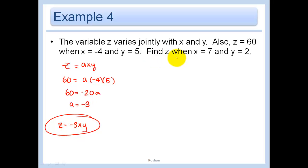And then it says find Z when X is 7 and Y is 2. So we have Z equals negative 3 times 7 times 2. That would just be negative 21 times 2 or negative 42.